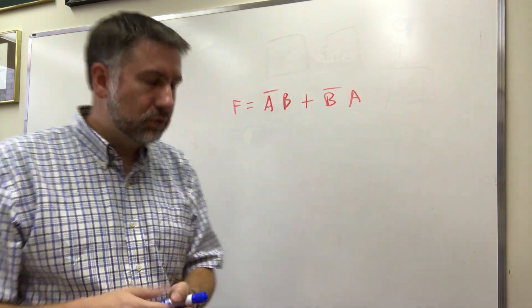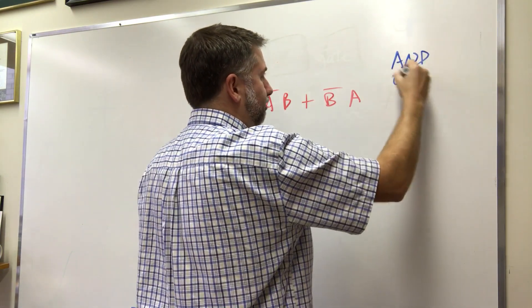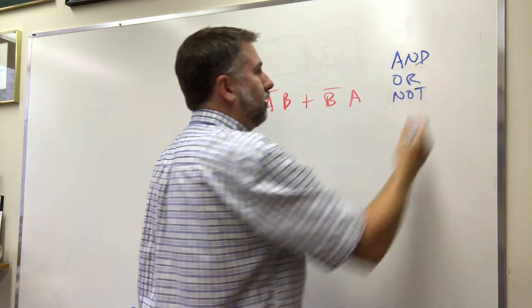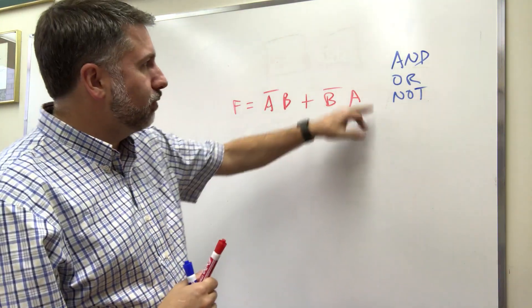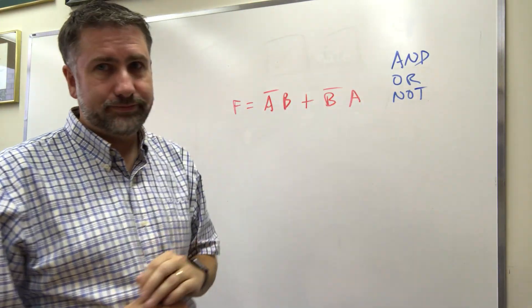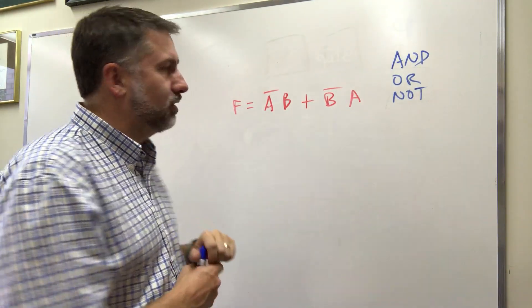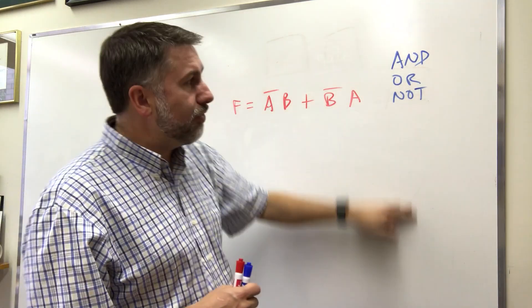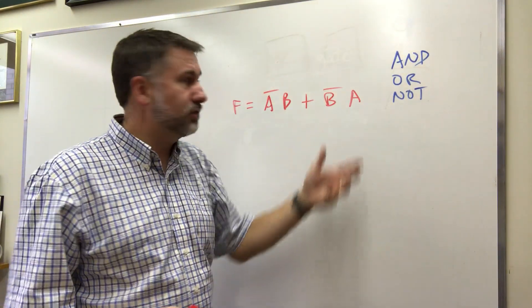Now there's a rule that says that if you have and, or, and not then you can build anything. So one of the things we could do is we could say I only want to use and, or, and not. Then if we're going to do that we're going to take this and simplify based on and, or, and not.